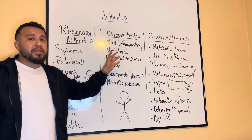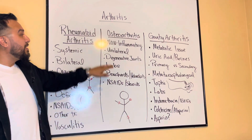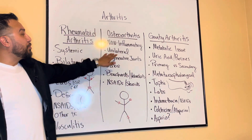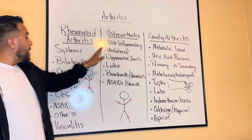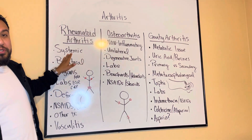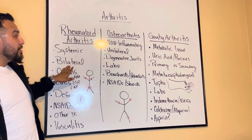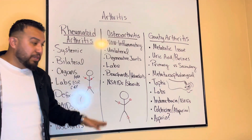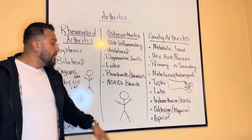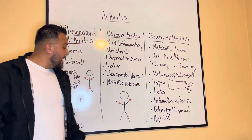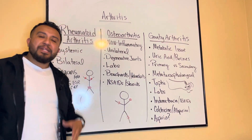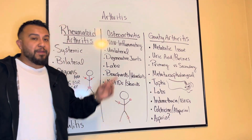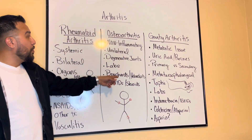Keep in mind that osteoarthritis, even though it has '-itis' in it, is considered a non-inflammatory, non-systemic issue. It's usually unilateral compared to rheumatoid arthritis, which is bilateral. In osteoarthritis, it usually affects just one joint — it's not symmetrical. So that's important for us to be able to distinguish RA from OA.